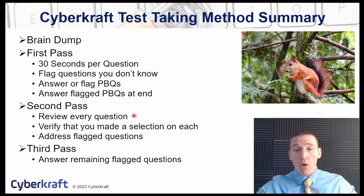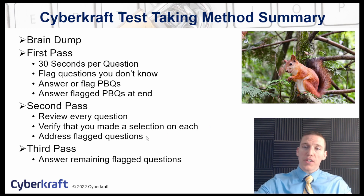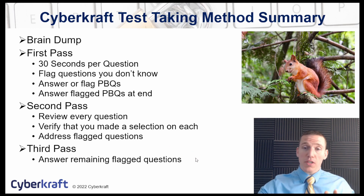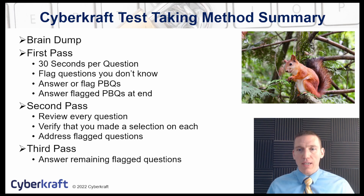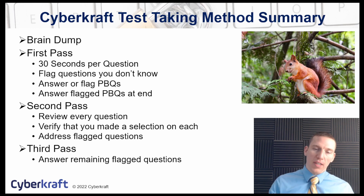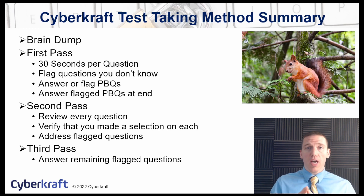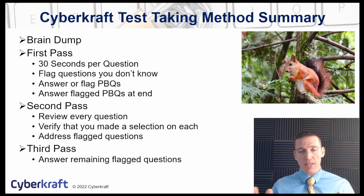On the second pass, review every question, make sure you made a selection and it's the right one, and address all the flagged questions — spending a little more time on them. On the third pass, answer any remaining flagged questions. If you're still unsure of a question after the second pass, go with your first instinct — what you selected first — and don't overthink it. Remember, most of these CompTIA certification tests require about 750 out of 900, so you don't need to answer everything correctly.